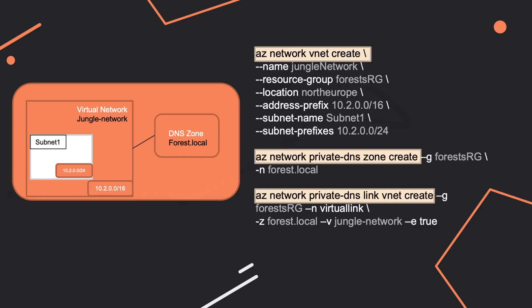If we take these lines one by one, we see how they are constructed. You're going to see 'az' everywhere, from Azure. You're going to see 'network,' which is normal because we're talking about networking. Then you'll have the resource — so you'll have 'vnet,' 'private-dns zone,' 'private-dns link,' 'vnet,' and then 'create.'